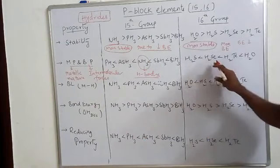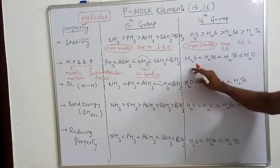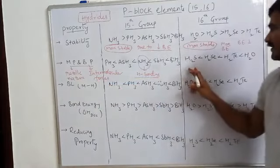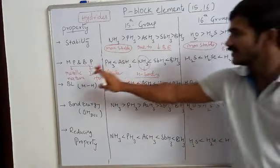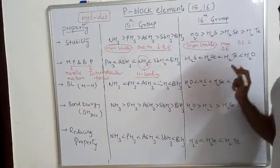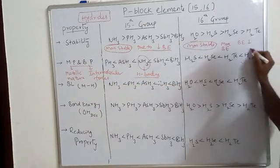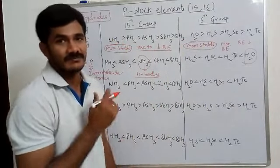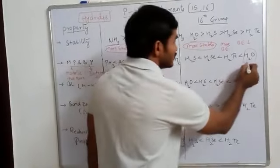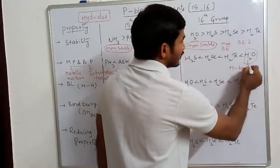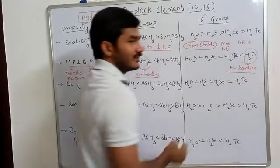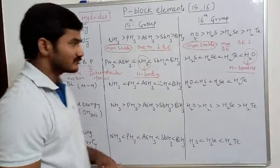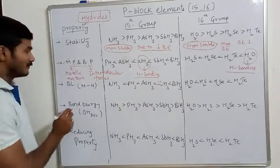For Group 16 hydrides, the same trends apply — metallic nature increases so melting points increase, and intermolecular forces increase so boiling points increase. Water is exceptional, having the highest boiling point and melting point due to strong intermolecular hydrogen bonding.